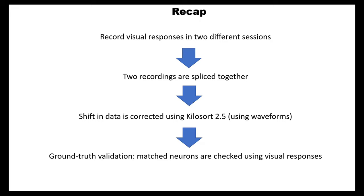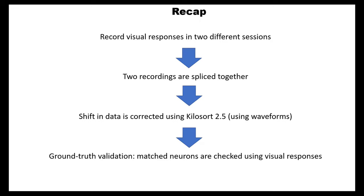To recap the whole process: we recorded visual responses in two different sessions, spliced them together, corrected the shifts in data, and used the Kilosort algorithm — which uses only waveforms of spikes — to sort these two sessions together. Then we did ground truth validation where we used visual responses in the two days to check if the algorithm actually returned the same neurons across the two days.